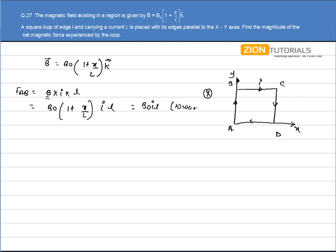I will calculate the force on CD. That will be given by B₀(1 + x/L)·I·L. Here x equals L because this length is equal to L, so it comes out to be B₀·2·I·L, and this force is towards right.